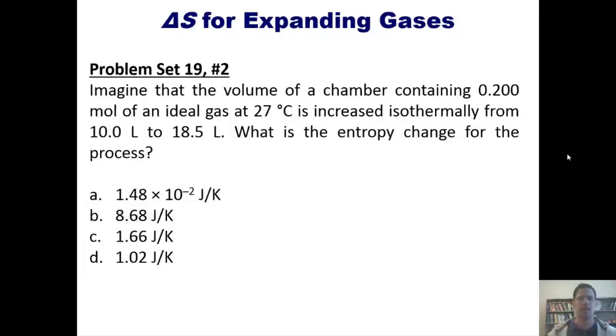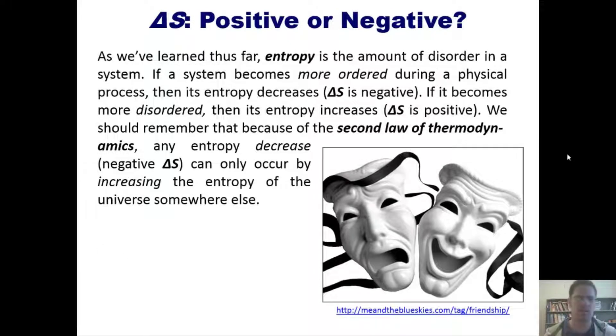Now, is delta S positive or negative? Well, so we've learned so far entropy is the amount of disorder in a system. If a system becomes more ordered during a physical process, then its entropy decreases—that is, it has a delta S that is negative. If it becomes more disordered, then its entropy increases—that is, it has a delta S that's positive. We should remember that because of the second law of thermodynamics, any entropy decrease or negative delta S can only occur by increasing the entropy of the universe somewhere else.